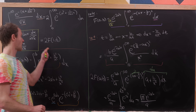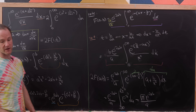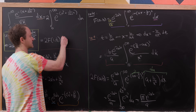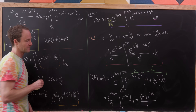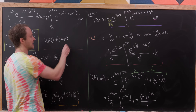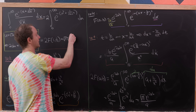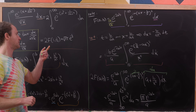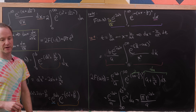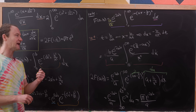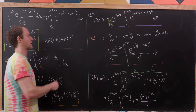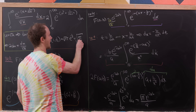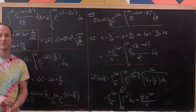Now we finish by plugging in our values. We need 2 times f(1, 1/4), so with a equal to 1 and b equal to 1/4, we get 2ab equal to 1/2. The result is the square root of pi times e to the minus 1/2, and since e to the minus 1/2 is 1 over the square root of e, the final answer is the square root of pi over the square root of e.